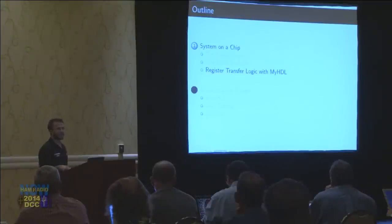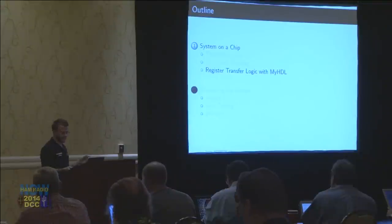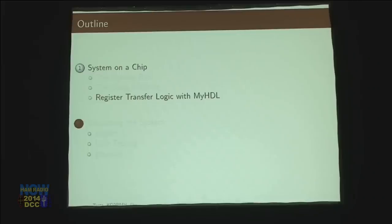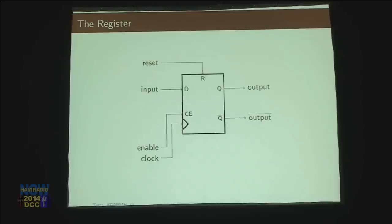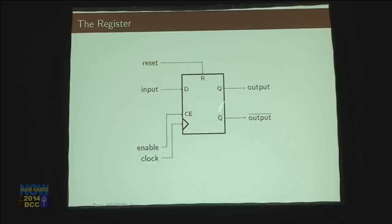We can encode that inside of transistors and have transistors do this for us. I use myHDL, which is this tool in Python, to help me build this layout of my transistors. The register is kind of like the fundamental thing — it's called register transfer logic. The register has a bunch of different inputs. This is called a D flip-flop. It has an input, an enable line, a clock line, and the reset line.